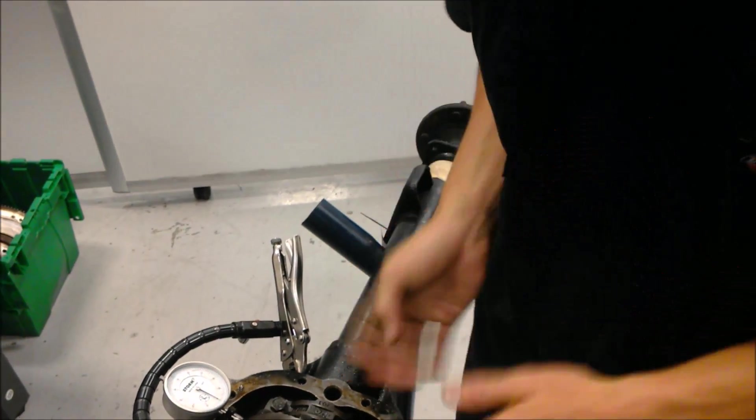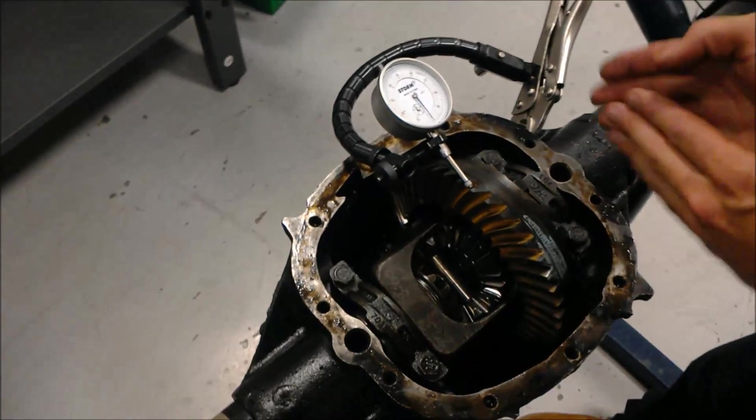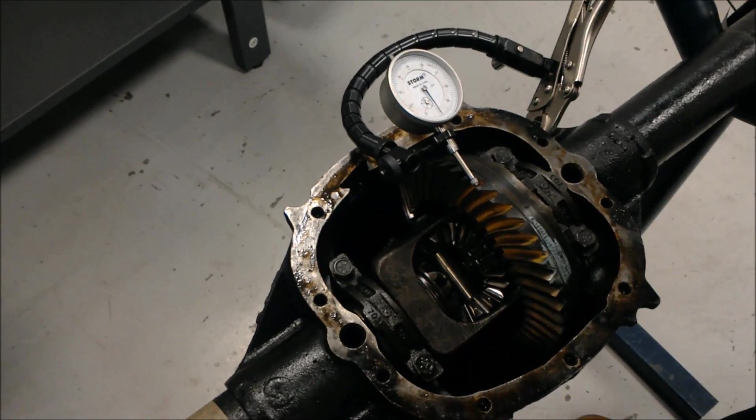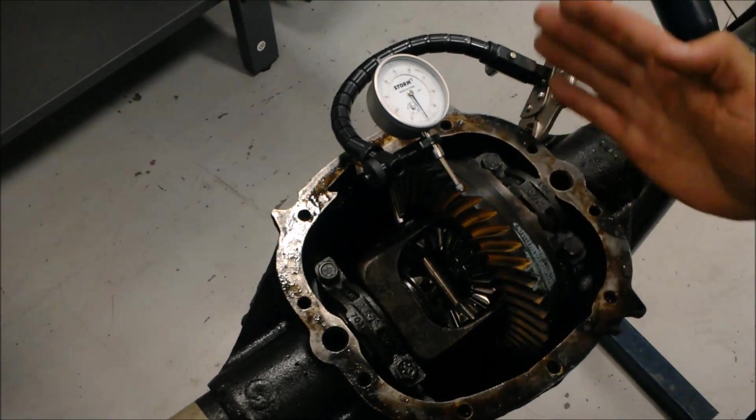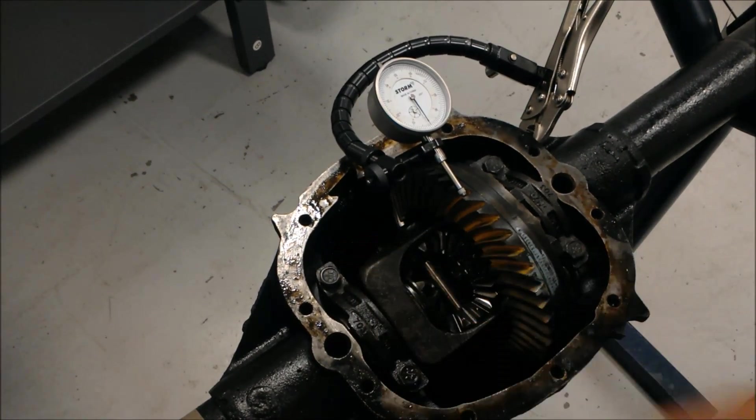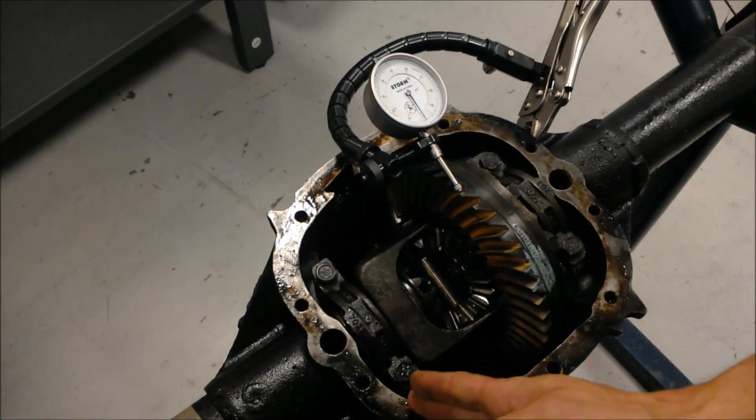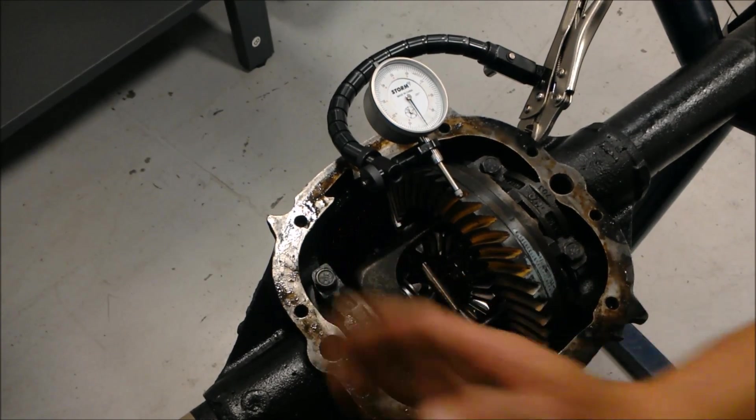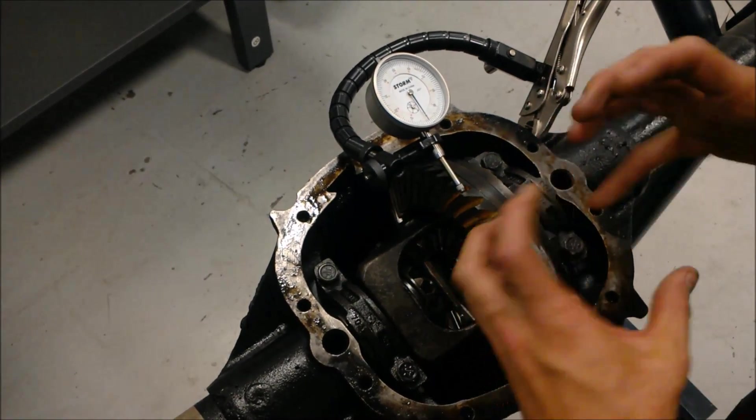And to change that, you actually add shims to one side or the other of the ring gear. If you want to tighten it, you're going to go ahead and put it on the backside of the ring gear to push the ring gear closer to the pinion and maybe take some away here if it's too tight. Or if you want to loosen it, you're going to add shims to this side of the ring gear and push it away from the pinion to actually make more space.